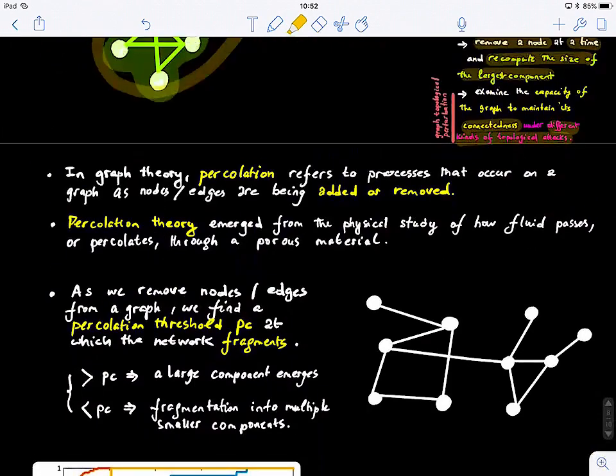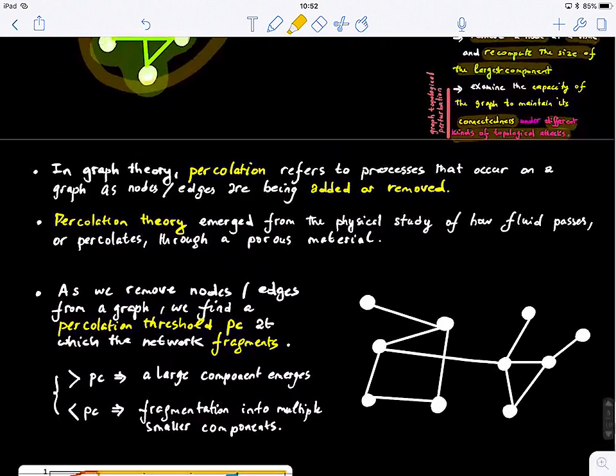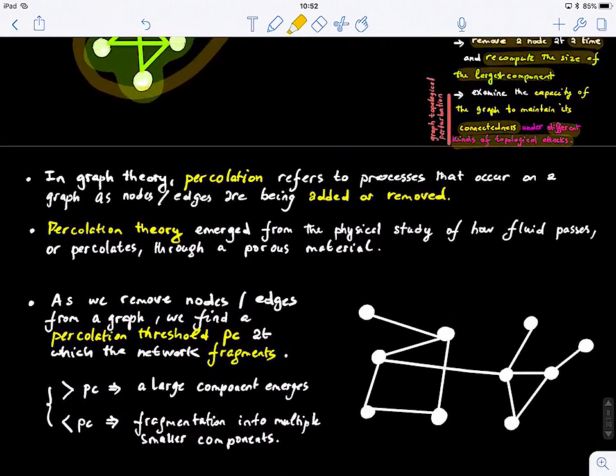So let's look at this one. So here I'm defining percolation. So what is percolation? In graph theory, percolation refers to the processes that occur on a graph as nodes are being either added or removed. So we have two options. And in percolation theory, percolation theory has emerged in the physical study. So we say a fluid, as it passes through a medium, it percolates that material.